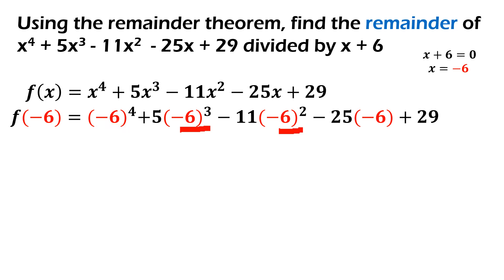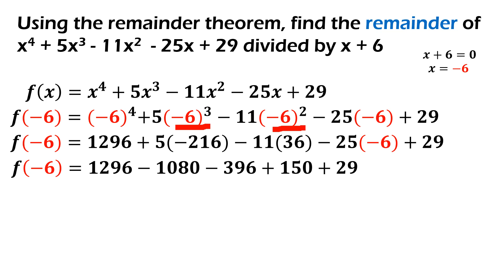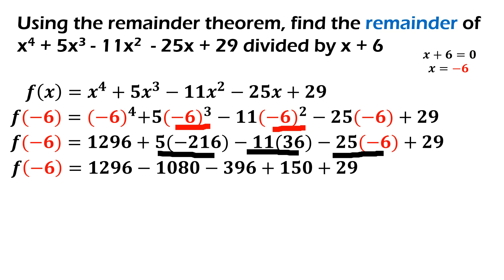Take note of the signs. Negative 6 raised to the power of 4 is positive 1,296. Negative 6 cubed is equal to negative 216. Negative 6 squared is equal to 36. Then, kinopy lang yung negative 25 times negative 6. Sunod na step is to multiply. 5 times 216 will be equal to negative 1,080. Negative 11 times positive 36 is negative 396. Negative 25 times negative 6 is positive 150. Pag magkapareho ng sign, add the number, copy the sign. Pag magkaiba — unlike signs — subtract the numbers and then copy the sign of the bigger number.